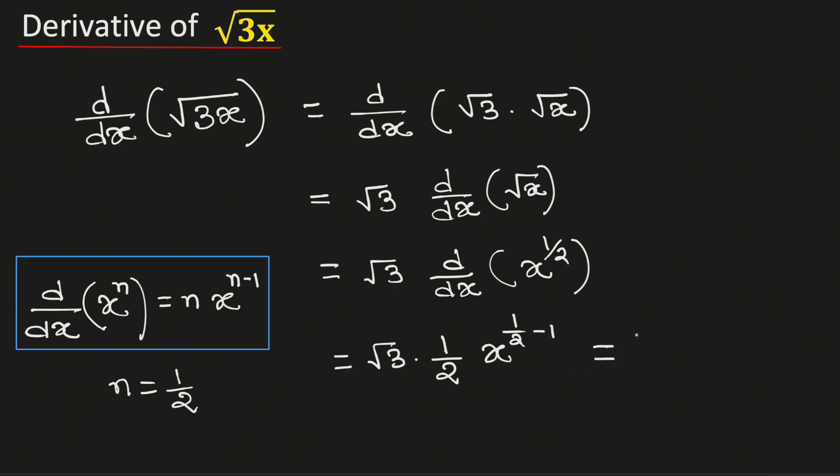Simplifying we get square root of 3 divided by 2 times x to the power negative one half. This can be rewritten as square root of 3 divided by 2 square root of x.